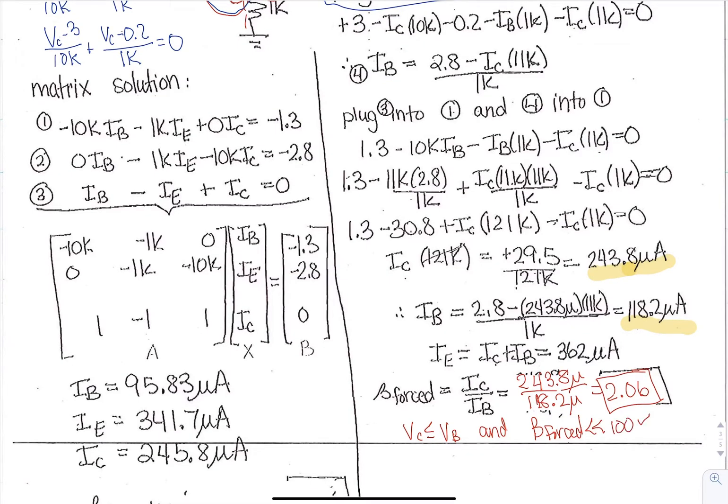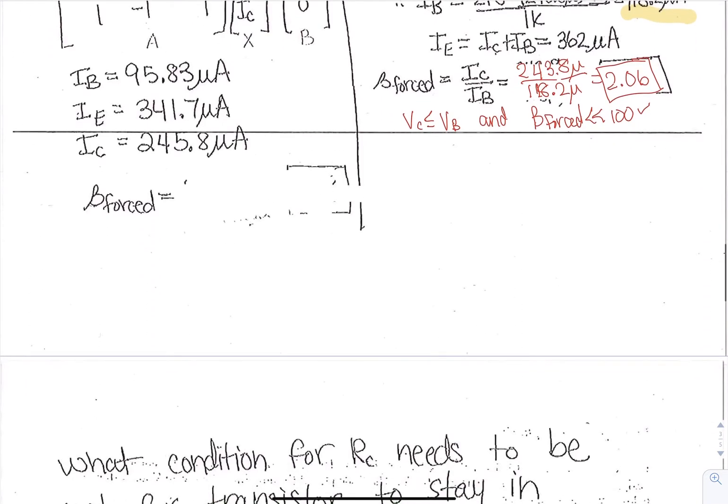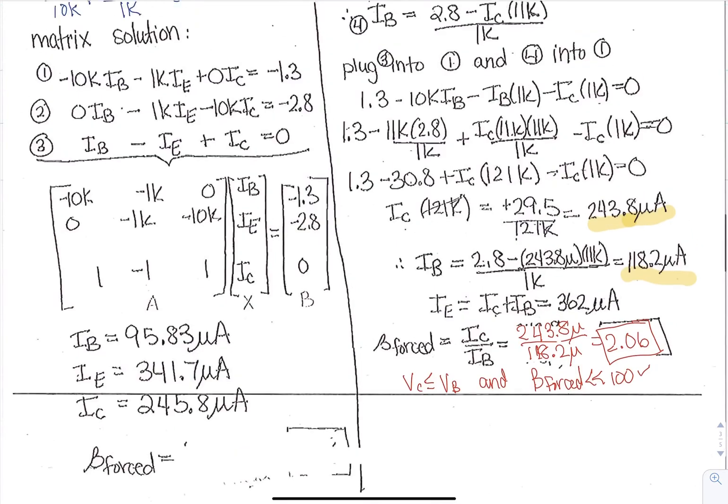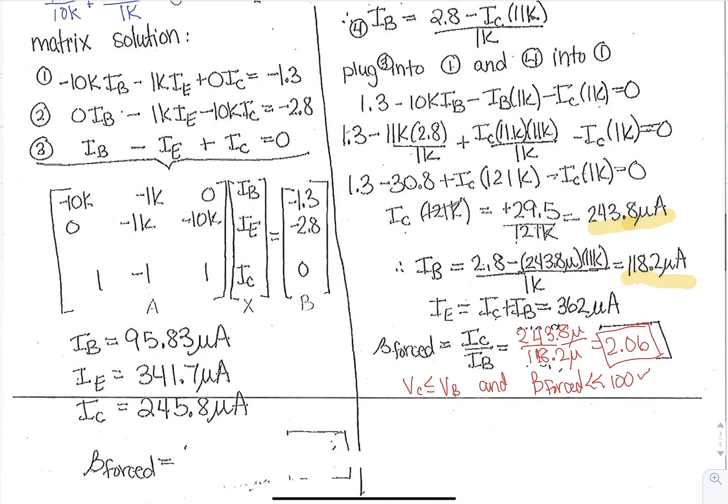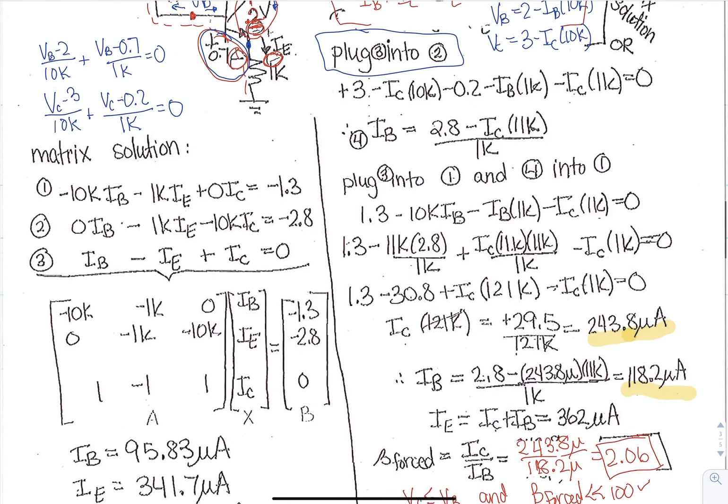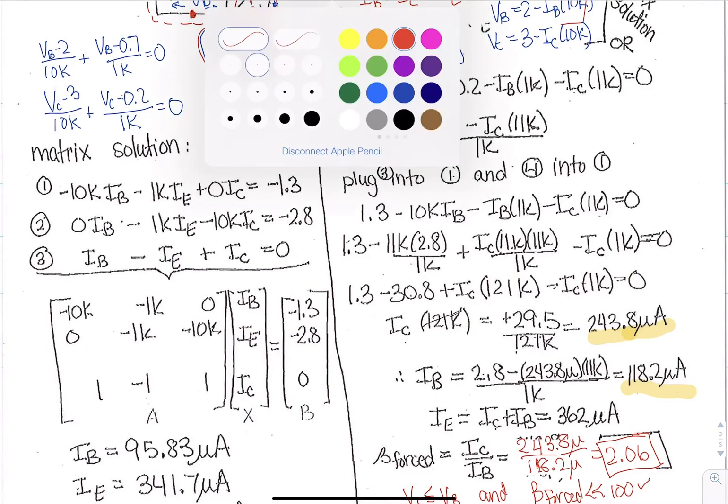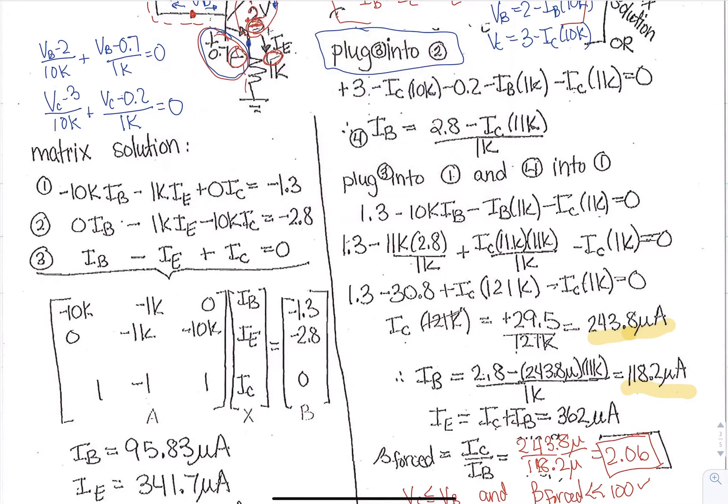So yes, 2 is less than 100. And VC we would have to calculate from the equation above, which I don't think I actually calculated it. But we could also check that one. If we wanted to solve this instead of algebra, we wanted to solve it using a matrix, then we can use this method here.